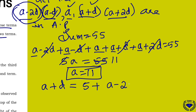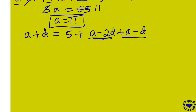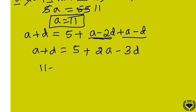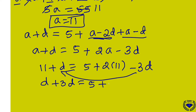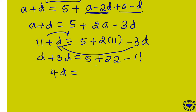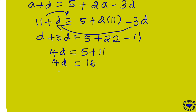So A plus D equals 5 plus (A minus 2D) plus (A minus D), which gives A plus D = 5 plus 2A minus 3D. Rearranging: D plus 3D equals 5 plus 2A minus A, giving 4D = 5 + 11 = 16, so D equals 4.